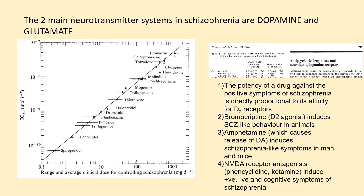Amphetamine, which causes the release of dopamine, induces schizophrenia-like symptoms in both man and mice. Turning to glutamate, NMDA receptor antagonists such as phencyclidine and ketamine also induce some of the symptoms of schizophrenia. So in other words, activating D2 dopamine receptors or blocking NMDA glutamate receptors produces a state very much like schizophrenia.